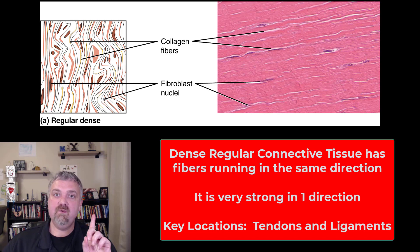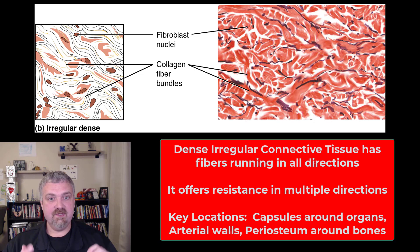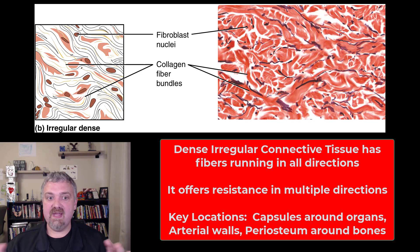Compare that to dense irregular connective tissue. The collagen fibers are running all over the place in different directions. That means dense irregular connective tissue is not nearly as strong in any one direction, but it offers resistance and strength in all directions.